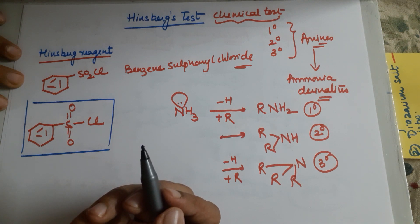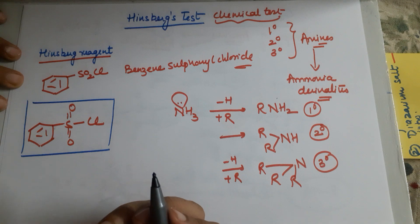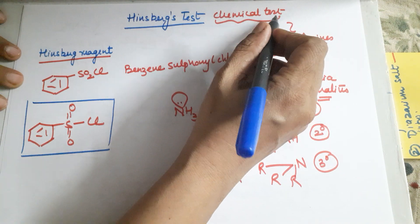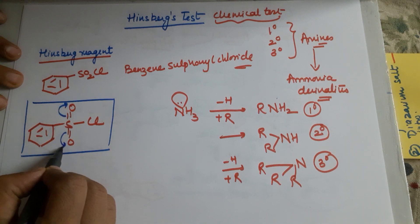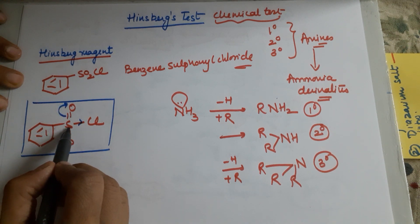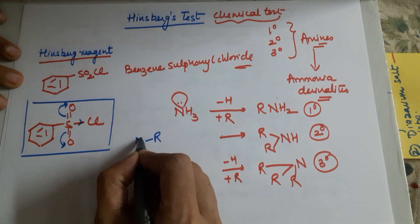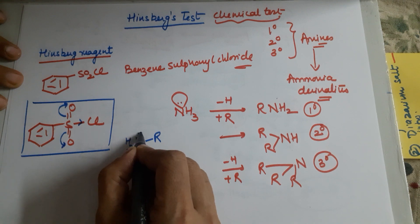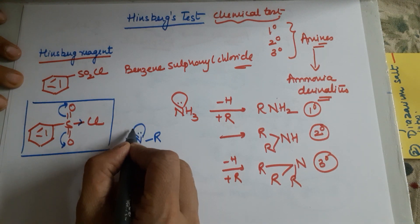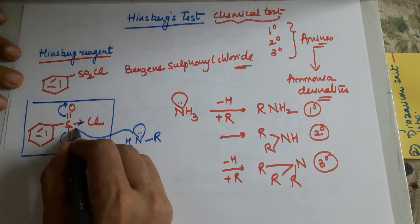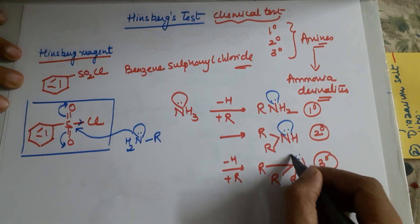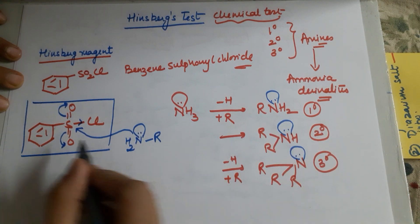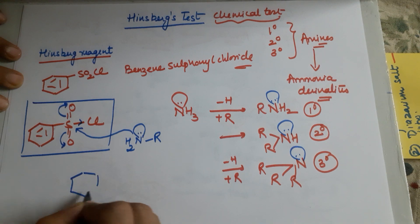For those of you who are interested in the mechanism, I'll give you a brief mechanism. Otherwise you don't require the mechanism because we are only going to do the chemical test. The oxygen pulls electrons, Cl pulls electrons, so sulfur becomes electron deficient. With the primary amine present, the lone pair of electrons on nitrogen goes and attacks onto the sulfur of the Hinsberg's reagent.